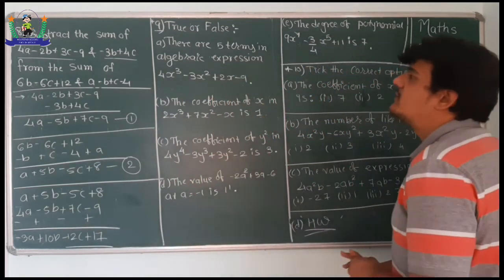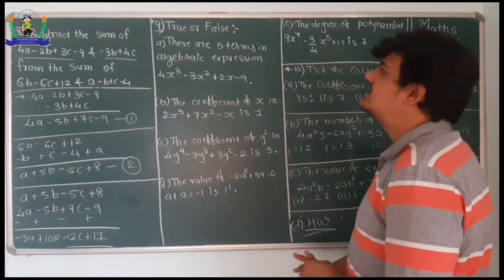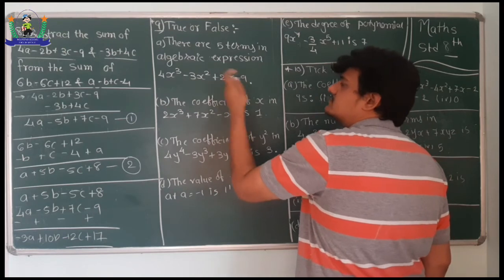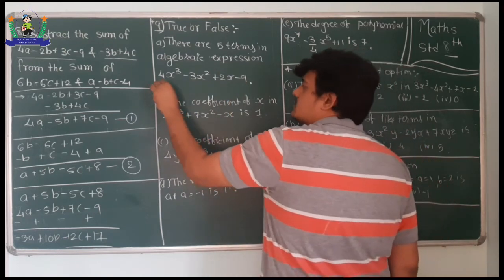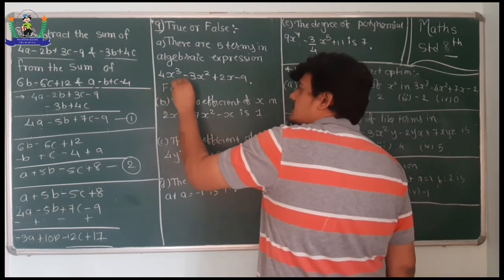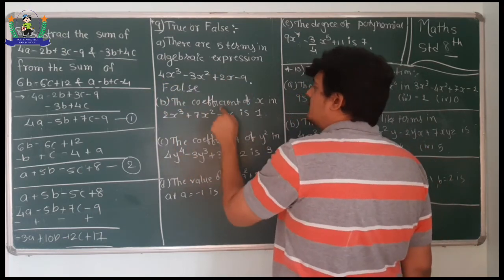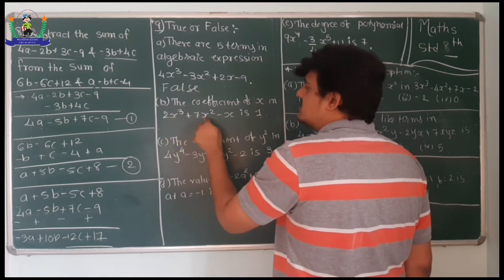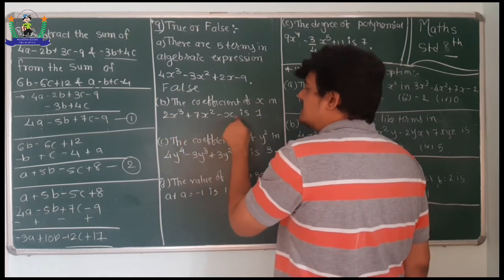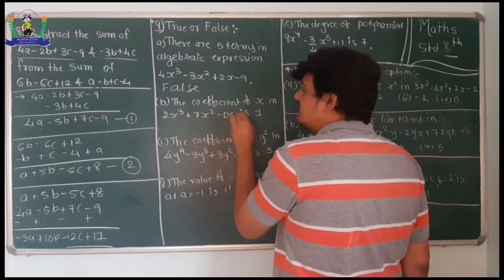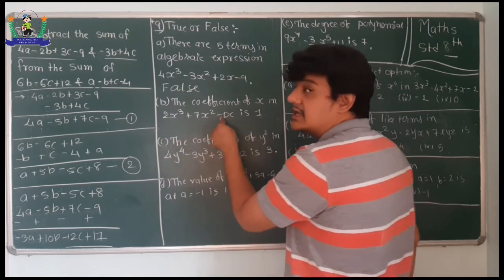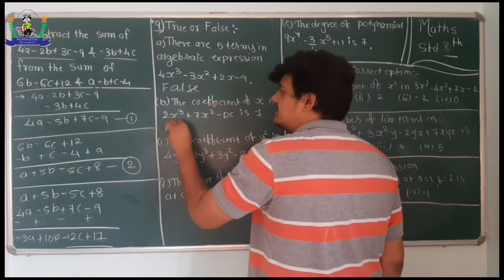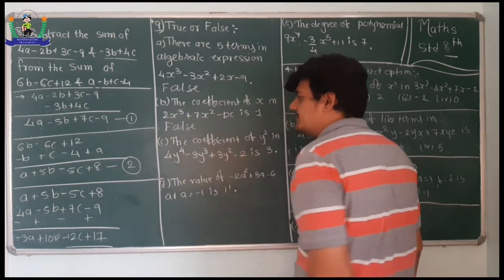Now True or False. First: there are 5 terms in the algebraic expression - counting gives only 4 terms, so this is False. Second: the coefficient of x in 2x³ plus 7x² minus x is 1 - technically there's a 1 but including the sign it is minus 1, so this is False.